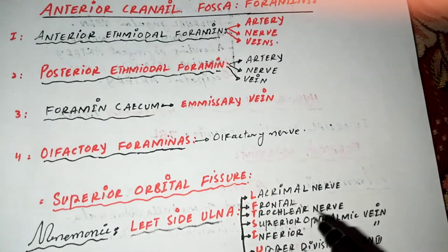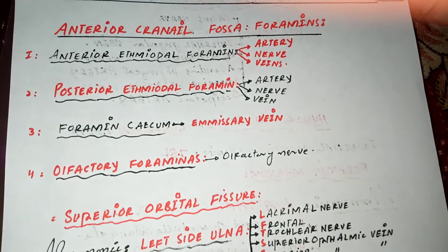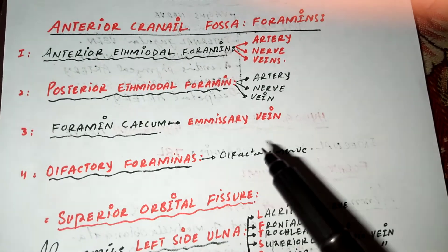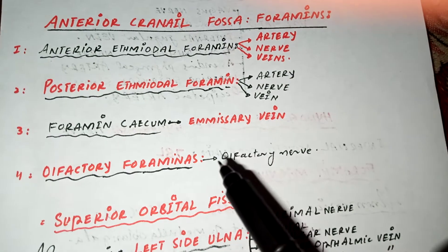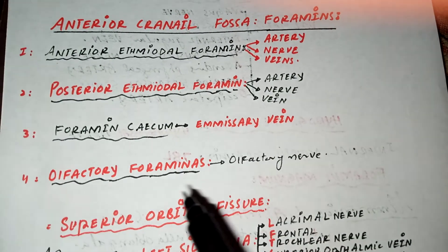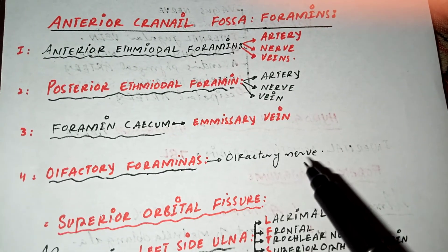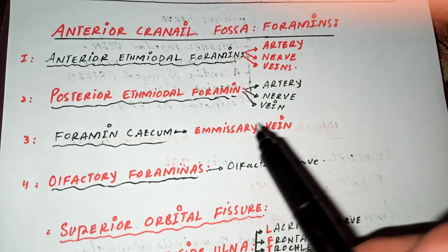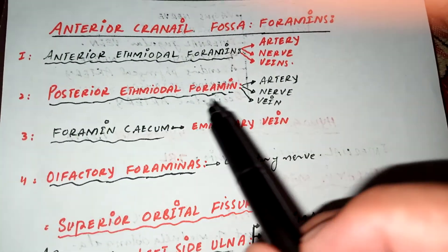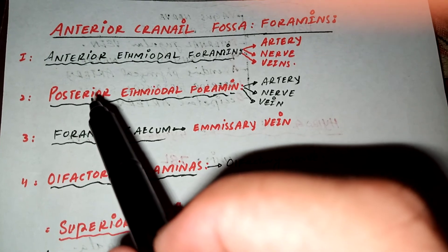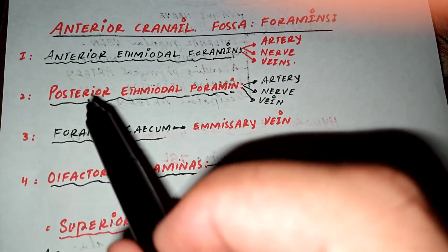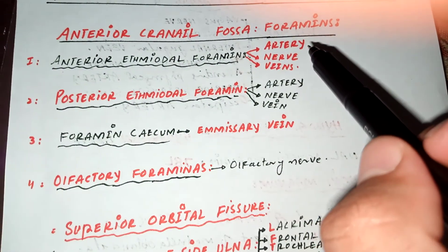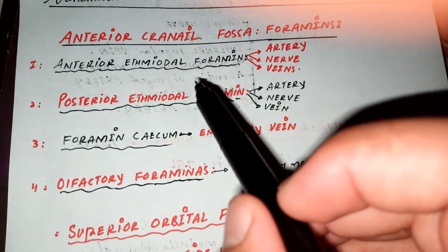The foramina present in the anterior cranial fossa are easy to memorize, so there is no need for a mnemonic. The olfactory foramina transmit the olfactory nerves. The foramen cecum transmits an emissary vein. The posterior ethmoidal foramina transmit the posterior ethmoidal artery, nerve, and vein. The anterior ethmoidal foramina transmit the anterior ethmoidal artery, nerve, and vein.